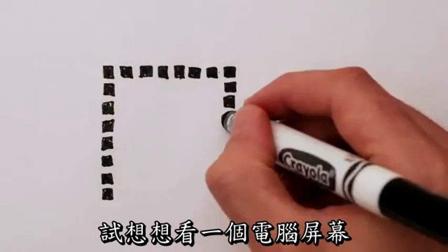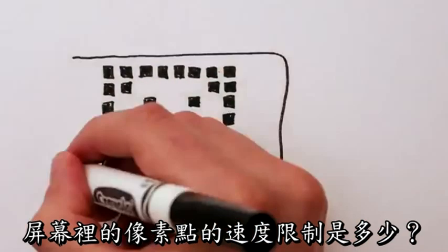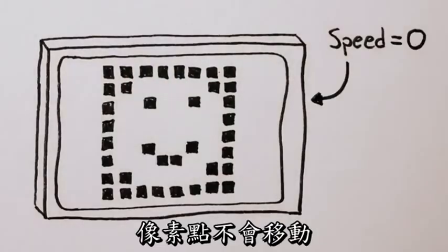How is this possible? Well, think about a computer screen. What's the speed limit for pixels on the screen? Zero. Pixels can't move.